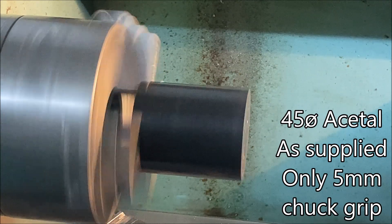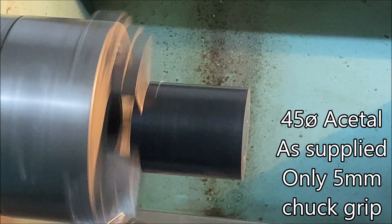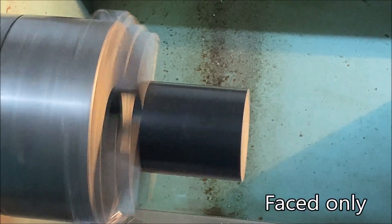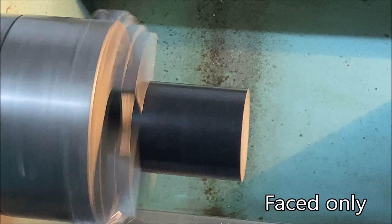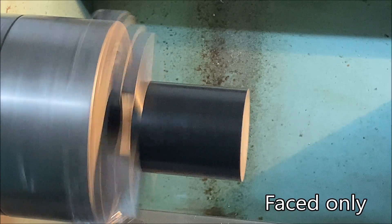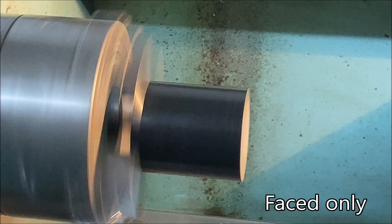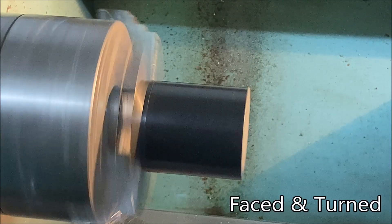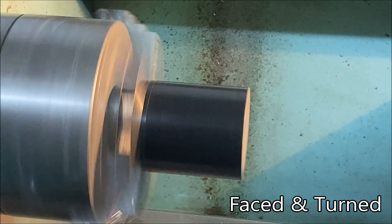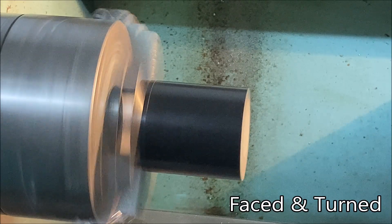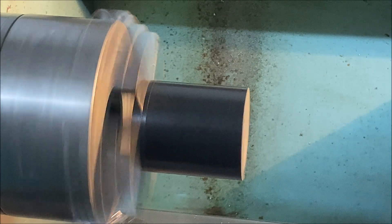Here you can see how it wobbles when just holding the material as it's supplied. This is after I've just faced it without any turning on the outer diameter, and this is when it's faced and turned. You can see it's running just about as good as it will get on the raw material.